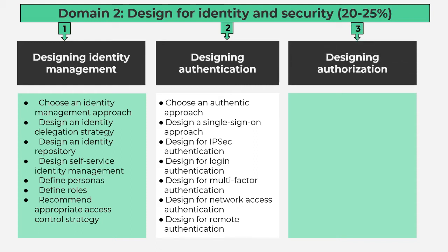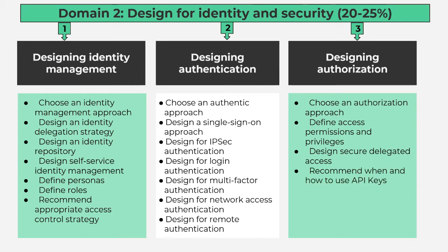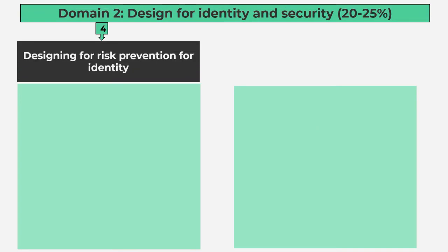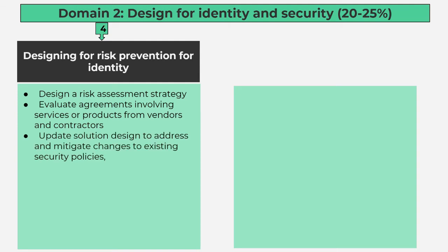Number 3, Designing Authorization contains 4 subtopics: choose an authorization approach; define access permissions and privileges; design secure delegated access; recommend when and how to use API keys. Number 4, Designing for Risk Prevention for Identity contains 4 subtopics: design a risk assessment strategy; evaluate agreements involving services or products from vendors and contractors; update solution design to address and mitigate changes to existing security policies, standards, guidelines, and procedures.